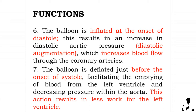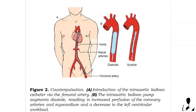This action results in less work for the left ventricle. Figure two shows counter-pulsation: (a) introduction of the intra-aortic balloon catheter via the femoral artery, and (b) the intra-aortic balloon pump augments diastole, resulting in increased perfusion of the coronary arteries and myocardium, and a decrease in left ventricular workload.